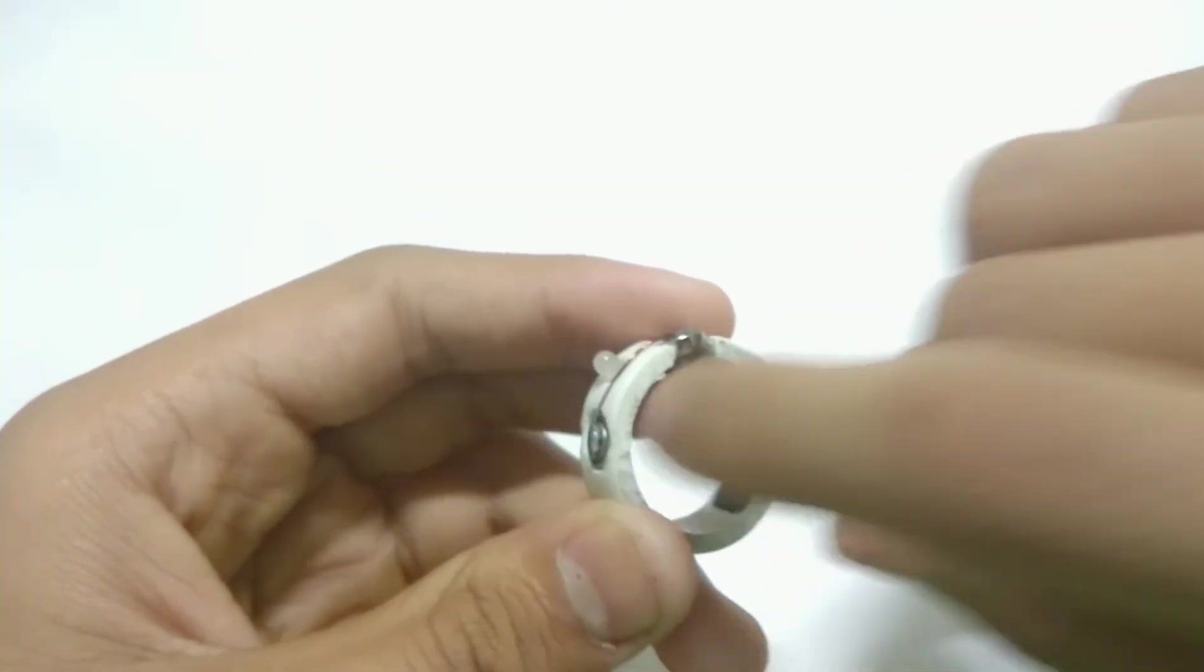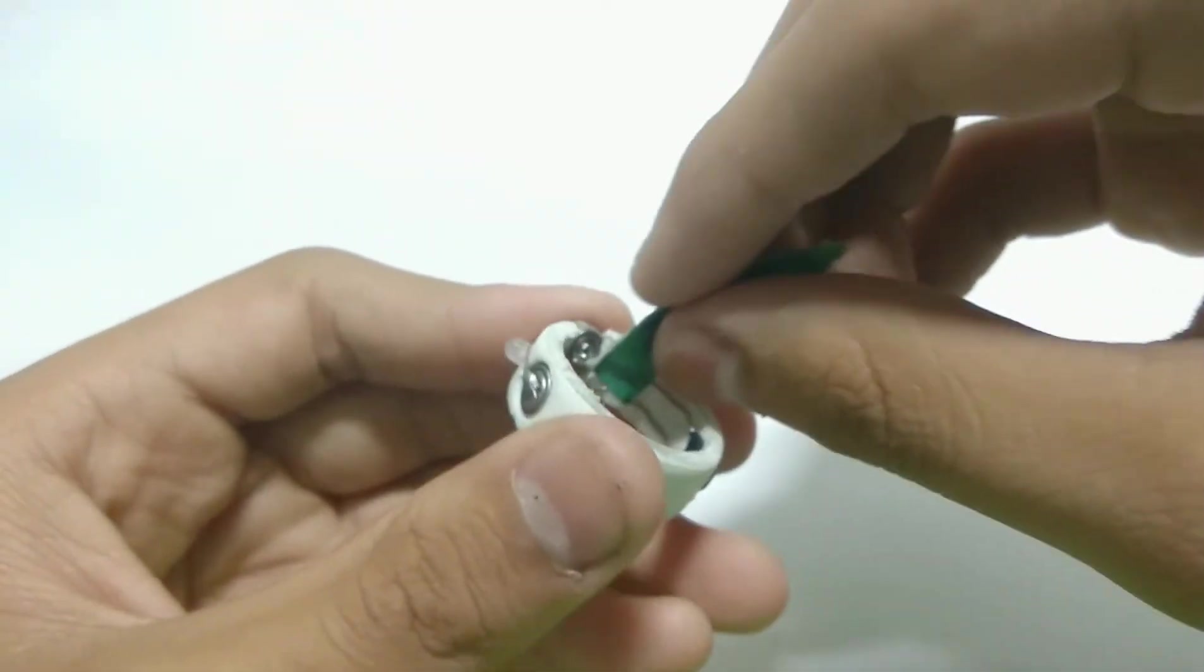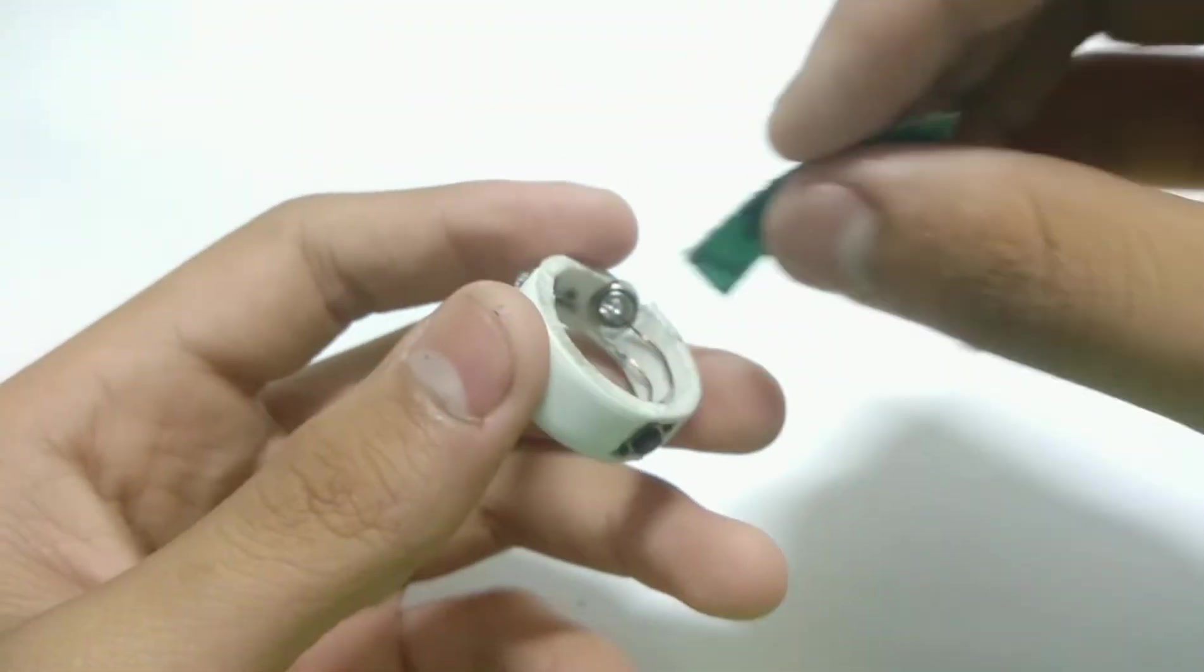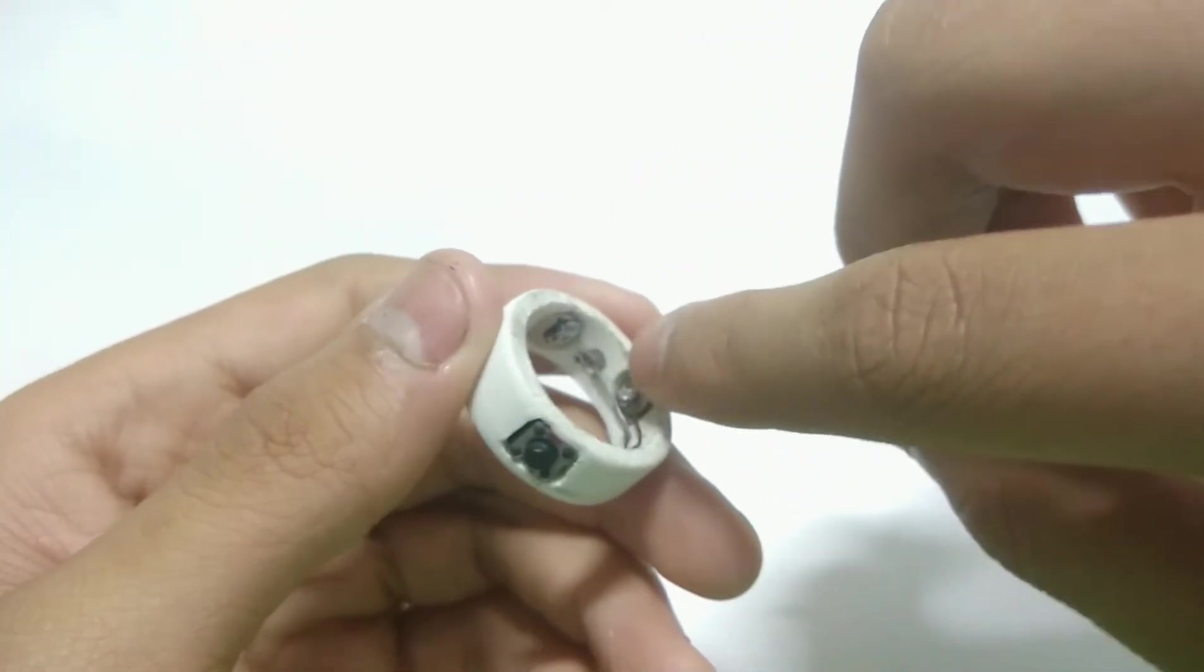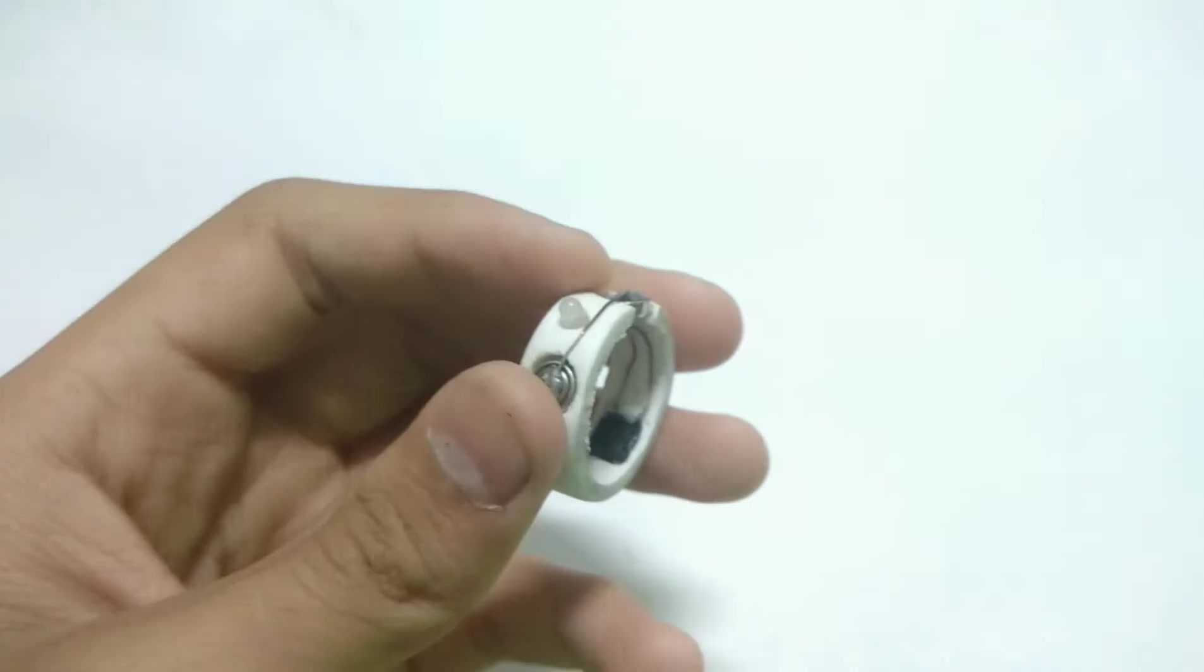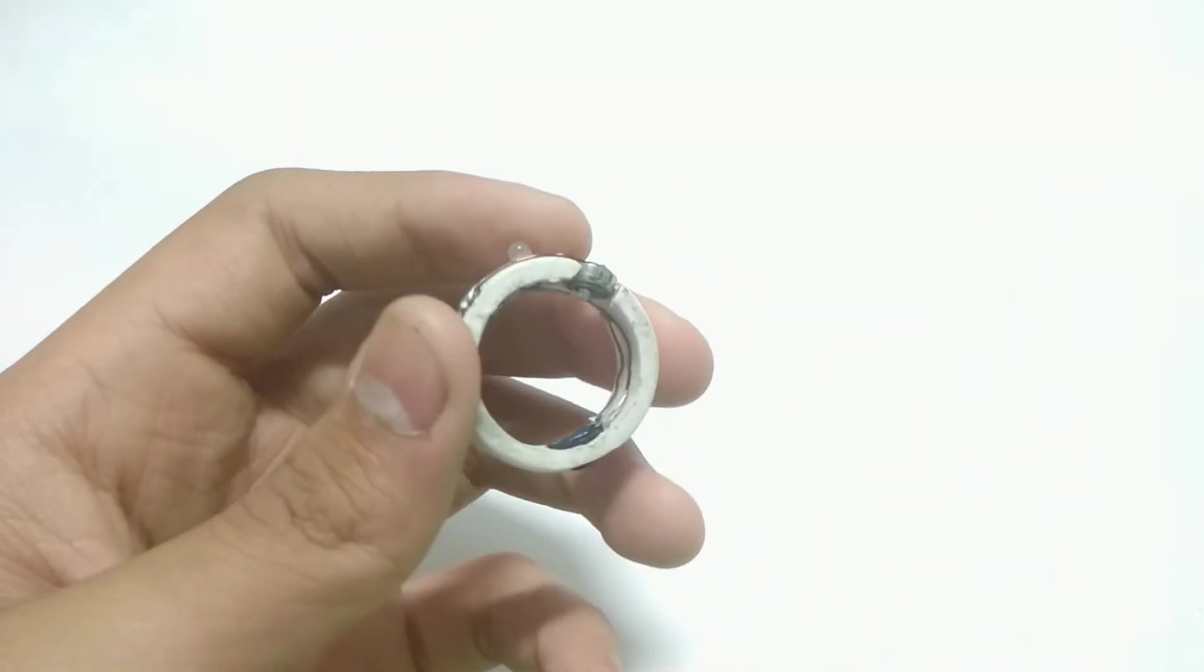Now I'll take this sandpaper strip and start sanding the ends where we just soldered so it doesn't hurt your finger and we are good to go. So let's see after sanding this.